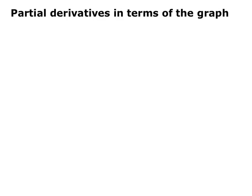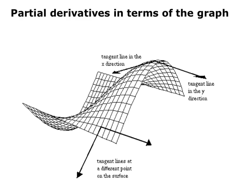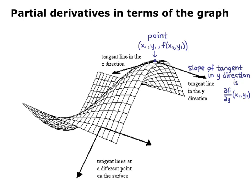Now, partial derivatives in terms of the graph. If we had some curvy surface, and at a point — let's call it x sub 1, y sub 1, and f of (x₁, y₁) — so it has an x, y, and z value. If we have the tangent line in the y direction, then the slope of the tangent in the y direction is partial f over partial y evaluated at (x₁, y₁). And the slope of the tangent line in the x direction is partial f partial x evaluated at (x₁, y₁). That's what the partial derivative finds: the slope of the tangent line in the x or y direction.